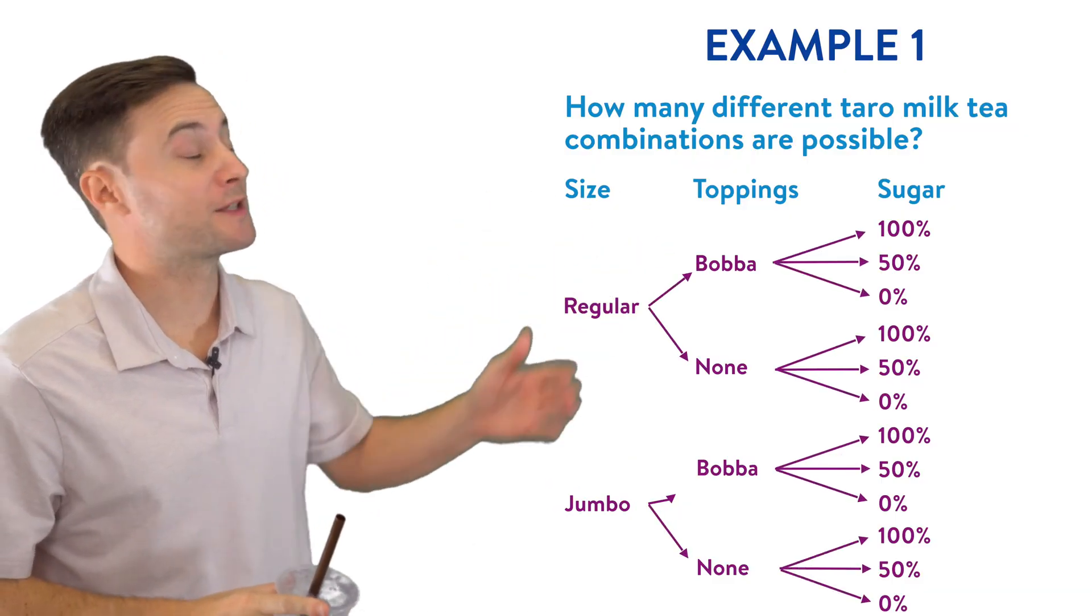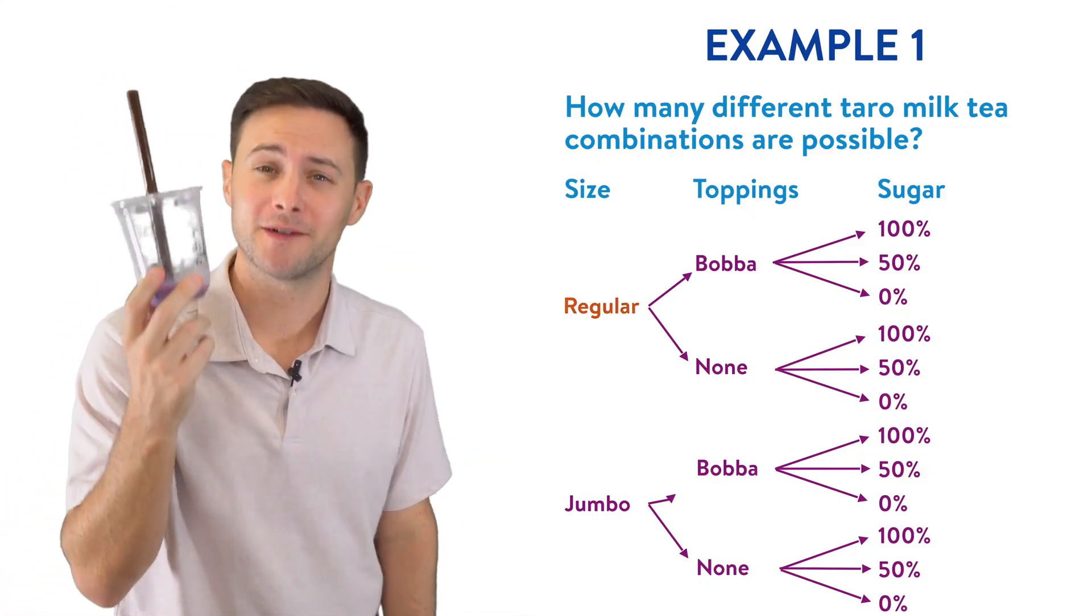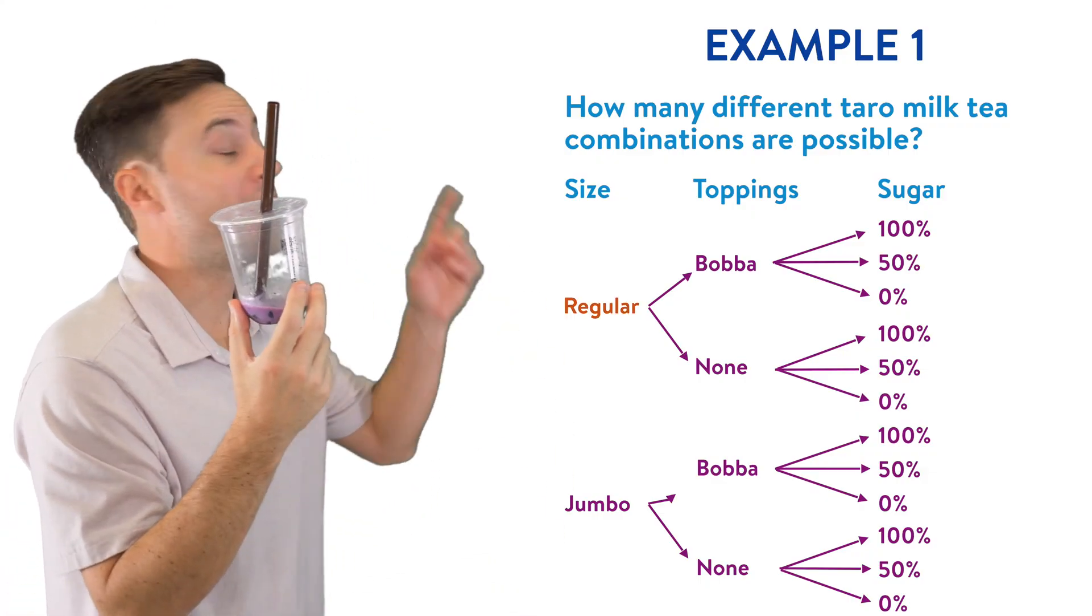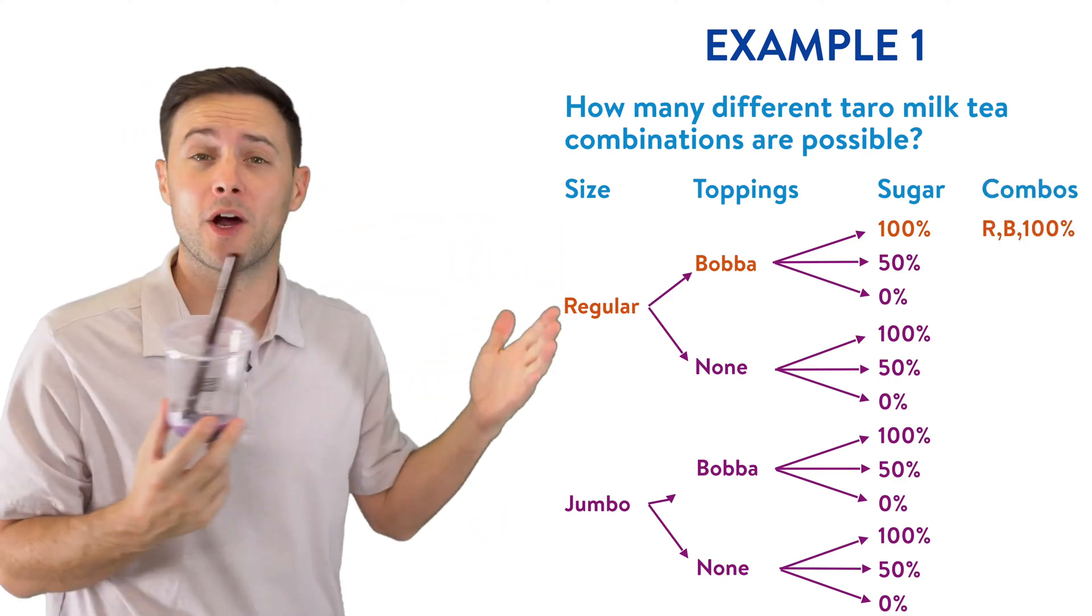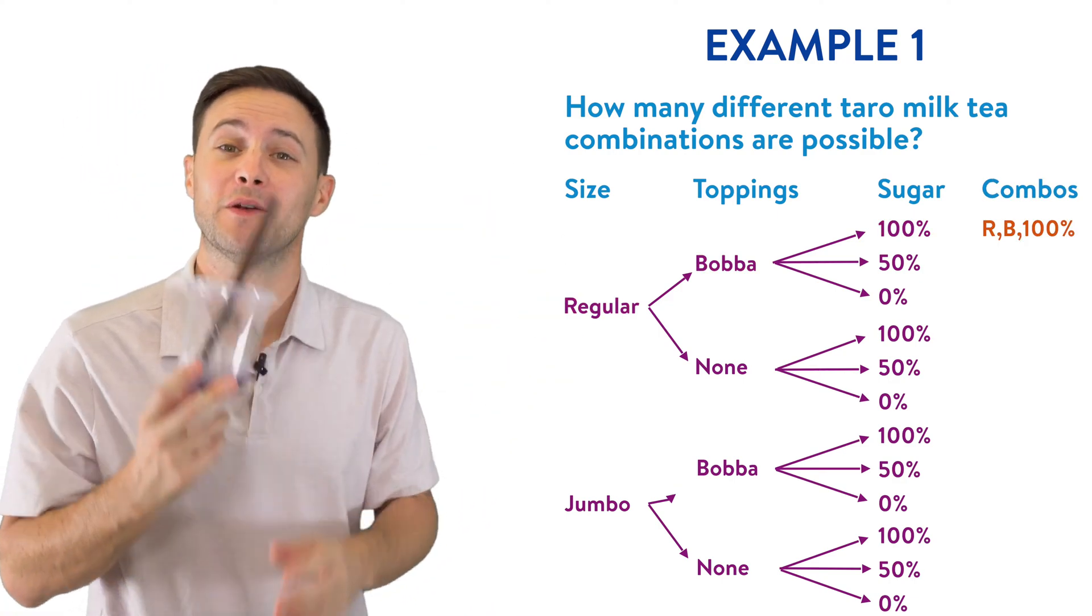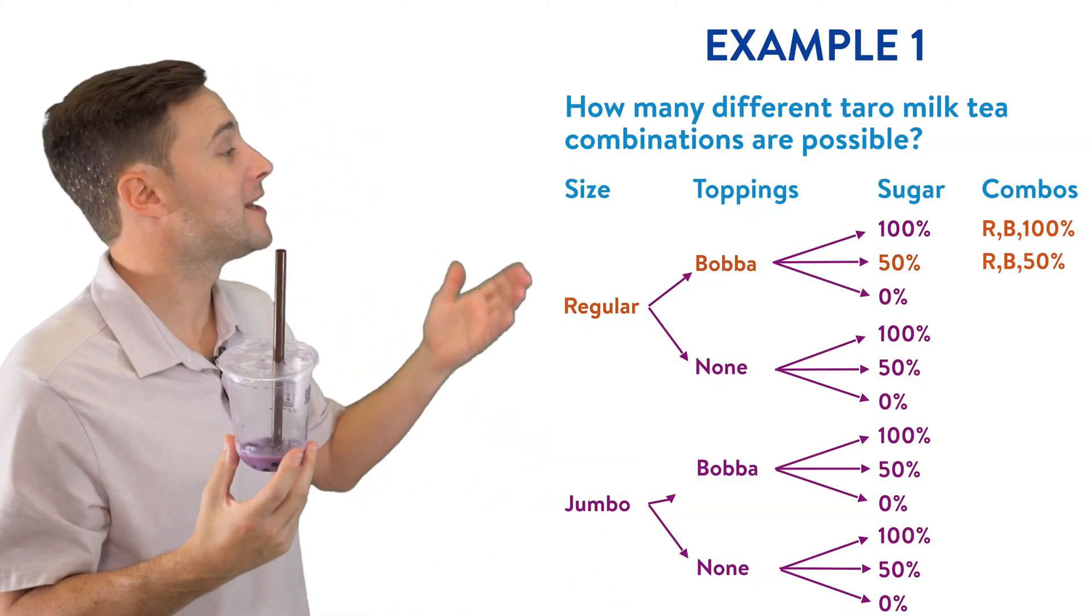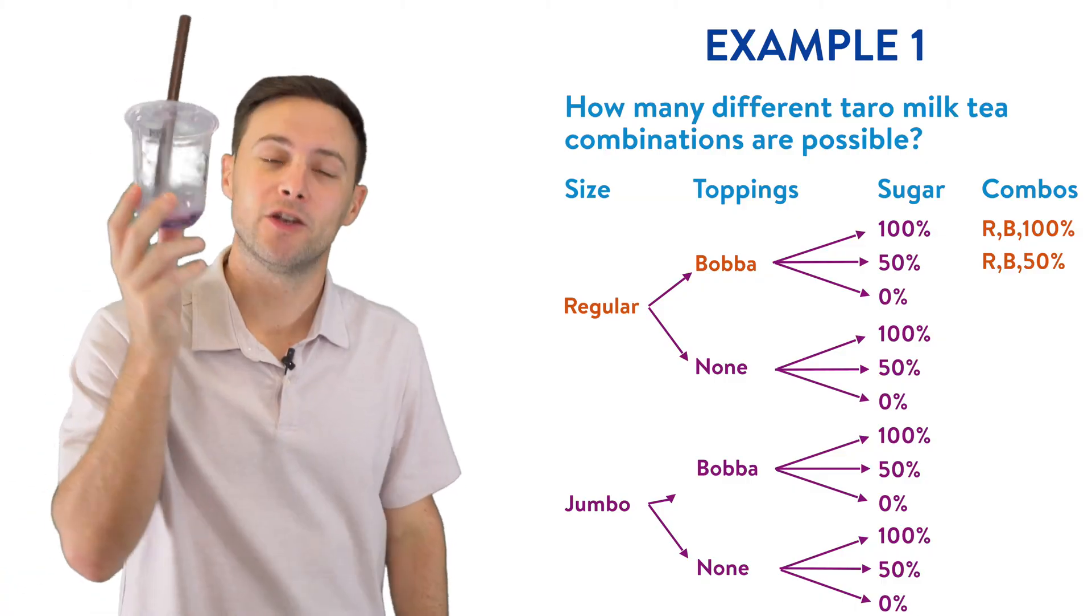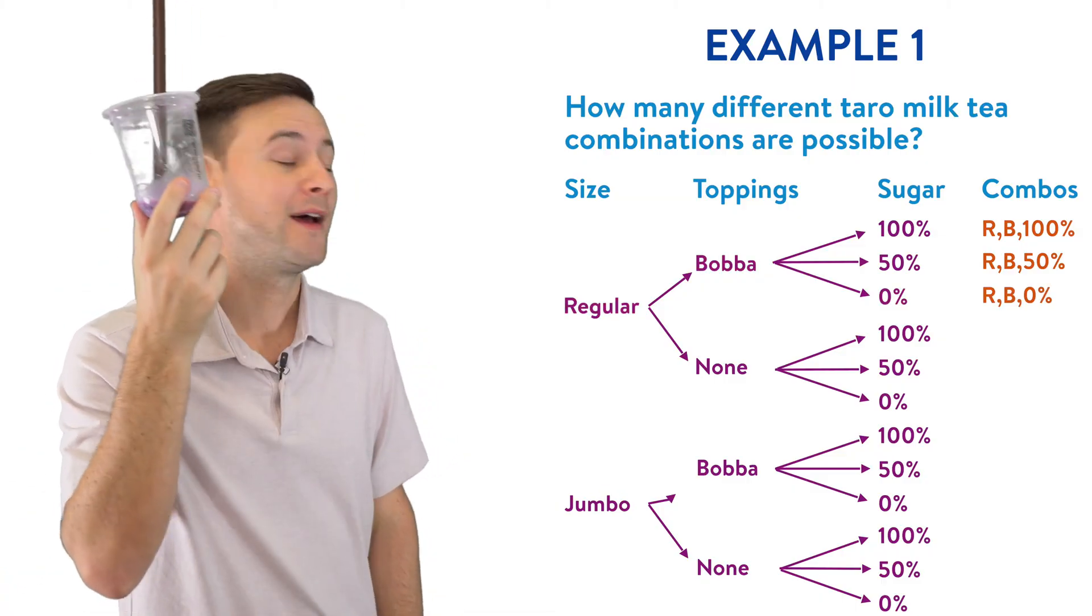And now we're ready to write down all those possible combinations. So first, let's start with a regular bubble tea with boba and 100% sugar. That would be our first combination. The next one would then be regular boba, 50% sugar, then regular boba, and no sugar. So those are some combinations with regular and boba.